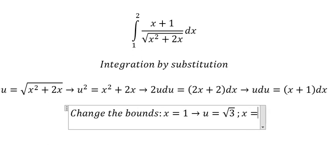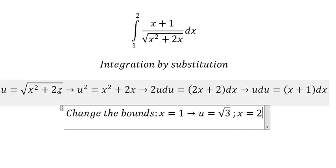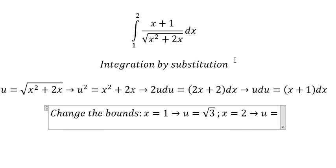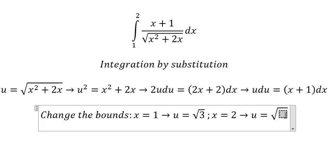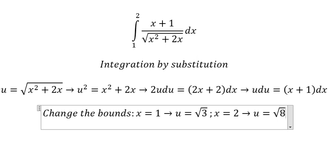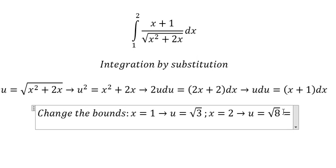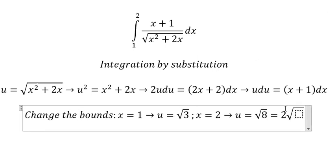If x equals to number 2, so we put number 2 in here, number 2 in here. So you will get the square root of number 8. The square root of number 8 equals to 2 square root of number 2.